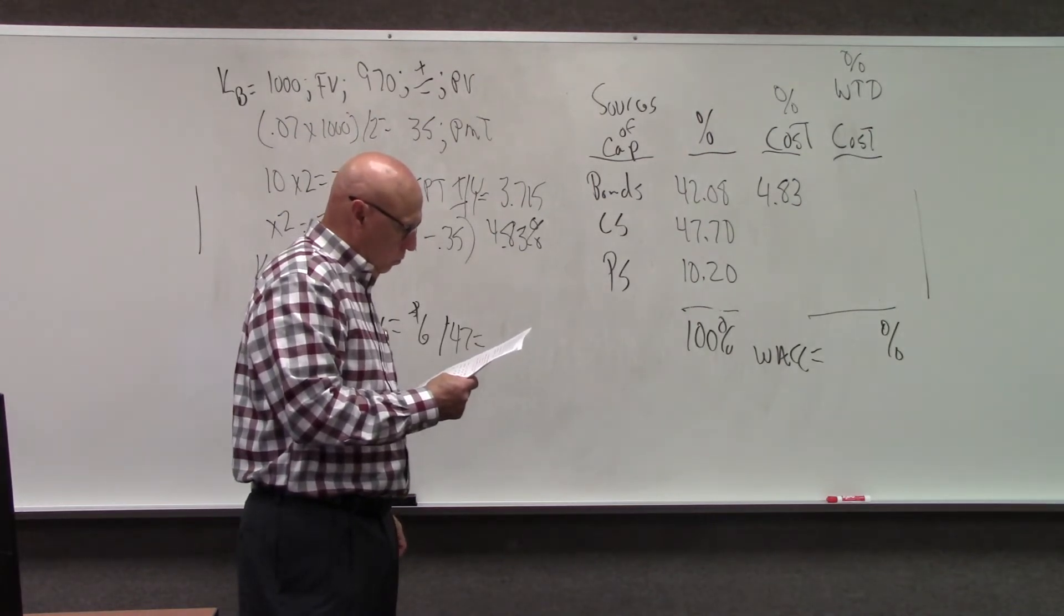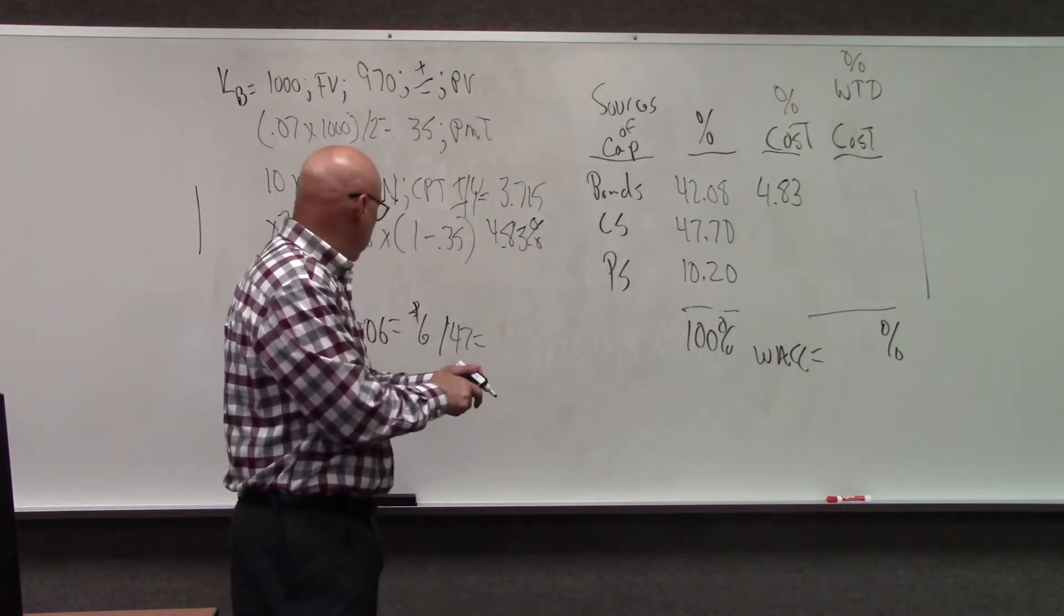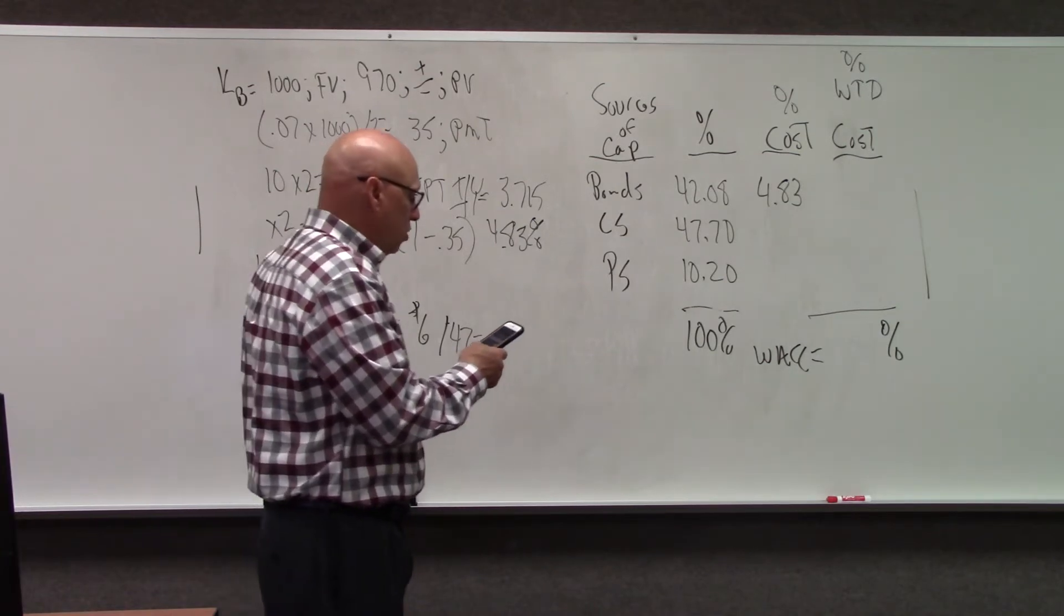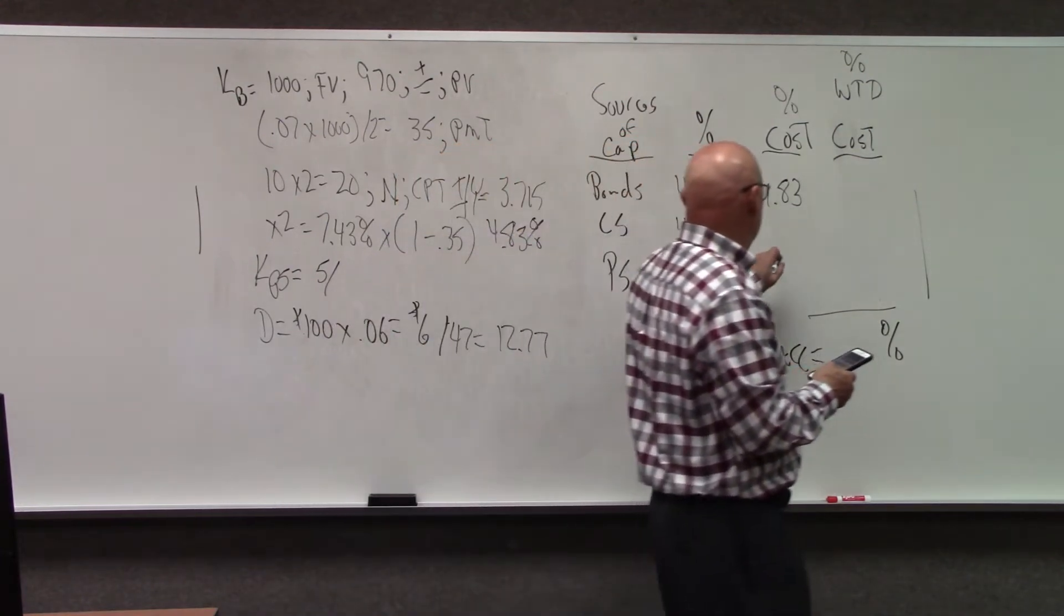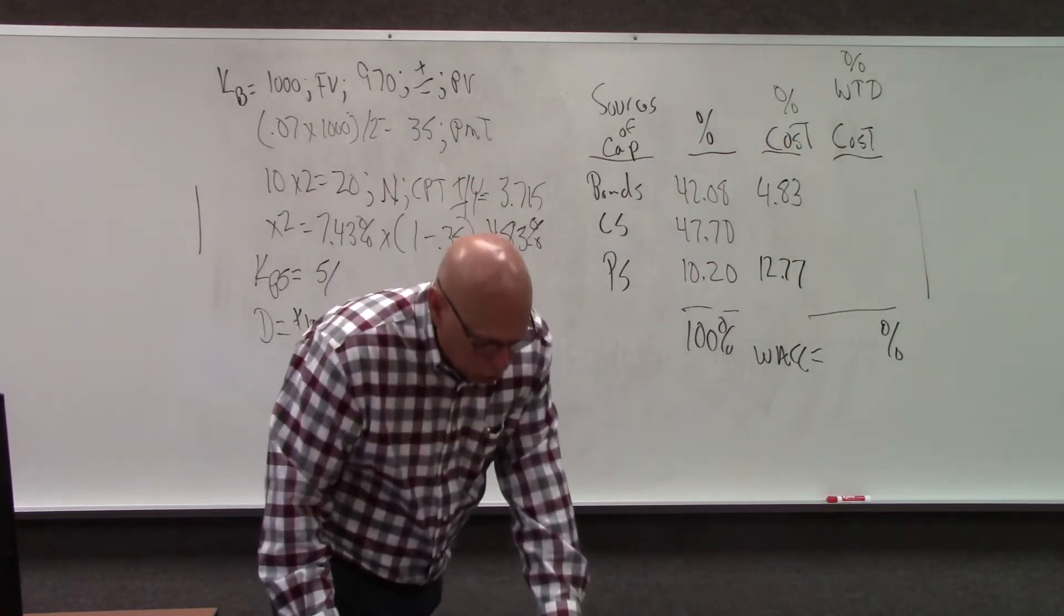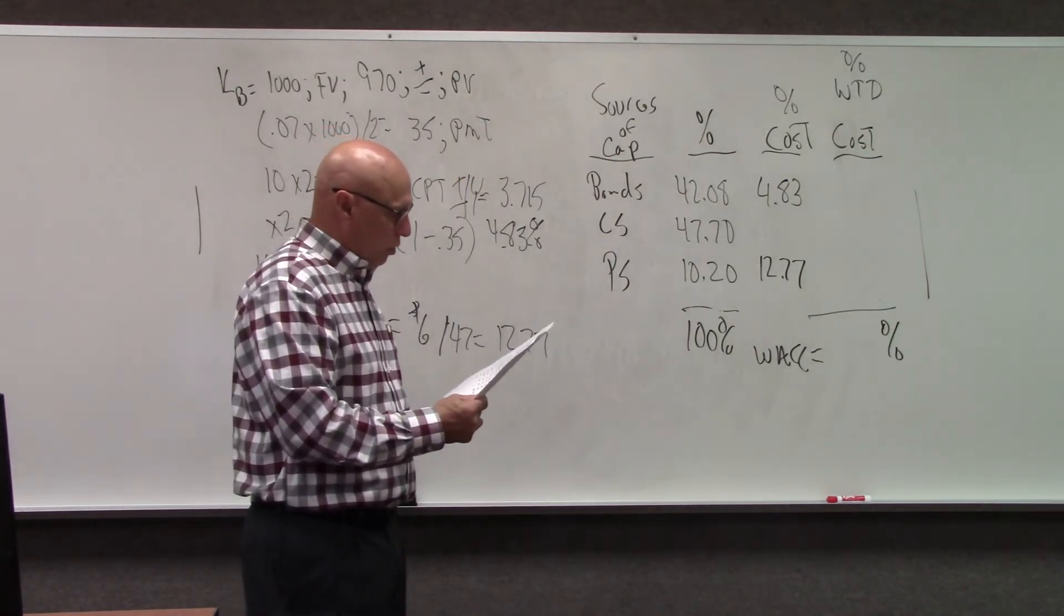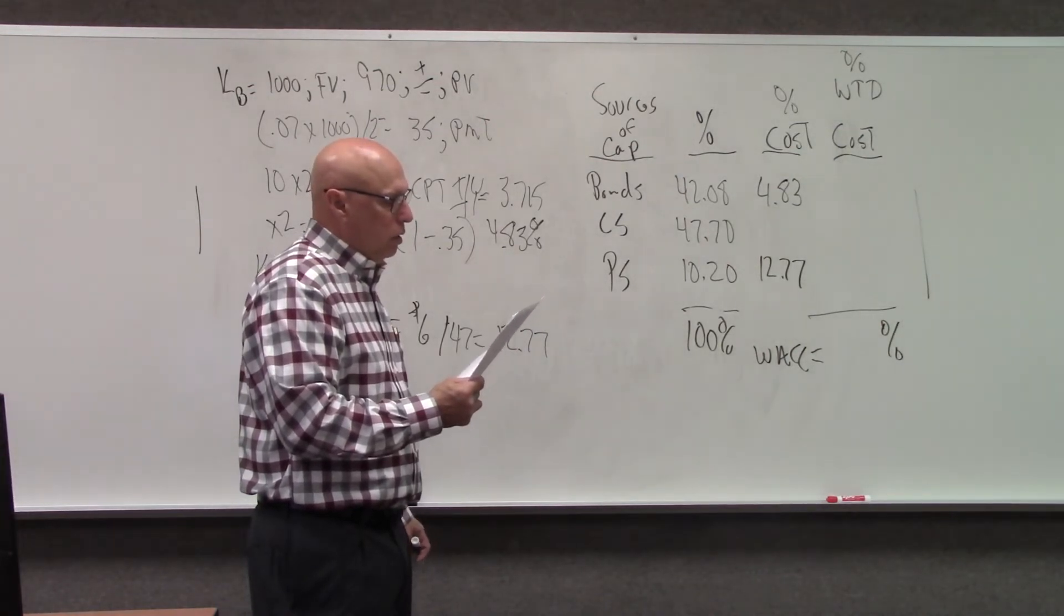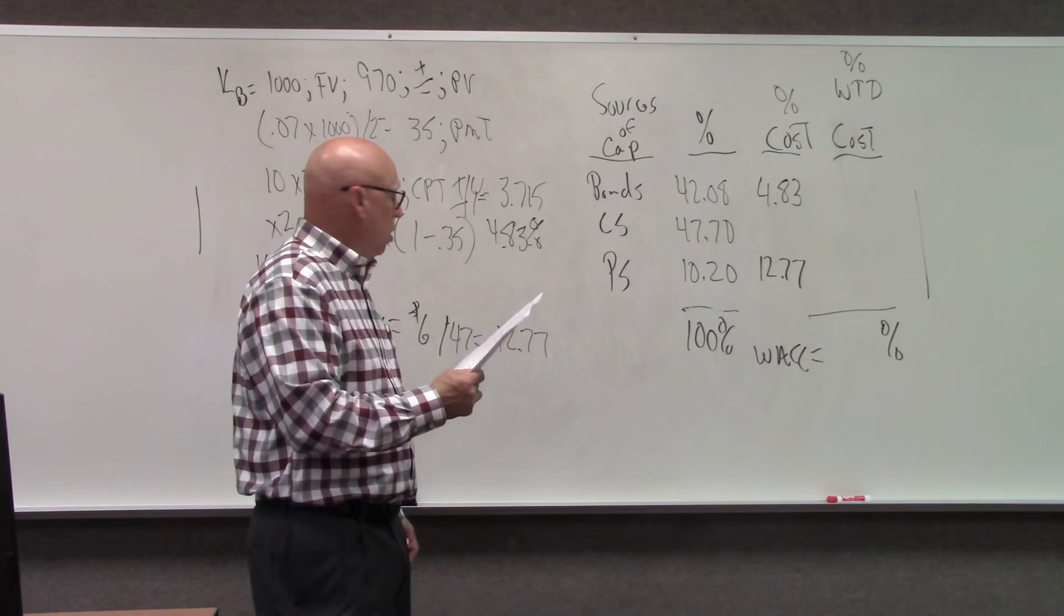I made a mistake on that one, so let's get it right. All clear. $6 divided by $47 is 12.77%. Let me make sure I'm doing this right because I made a mistake on my answer sheet. Issue price was $100, dividend yield at issue was 6%, so $6 into $47, that's right—it's 12.77%.